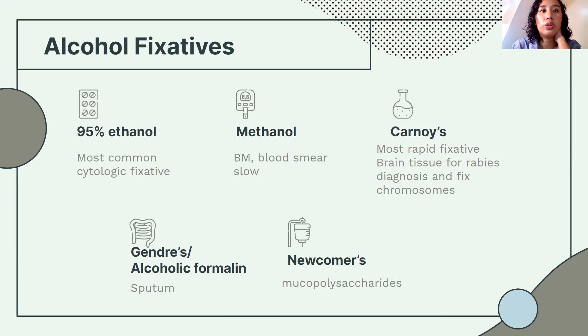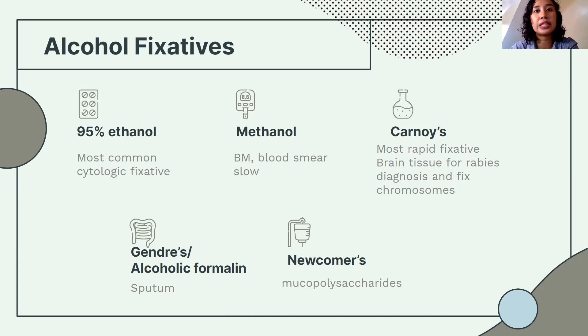Alcoholic formalin, as noted before, fixes sputum by coagulating mucus. Newcomer's fixative is used for mucopolysaccharides, similar to lead fixatives.